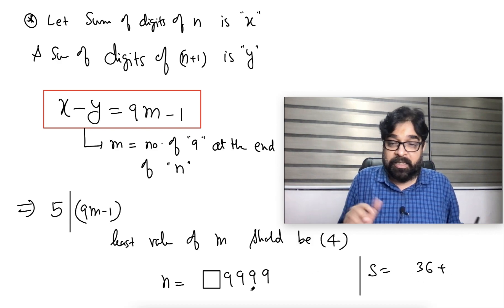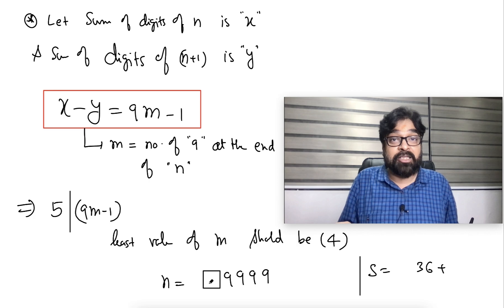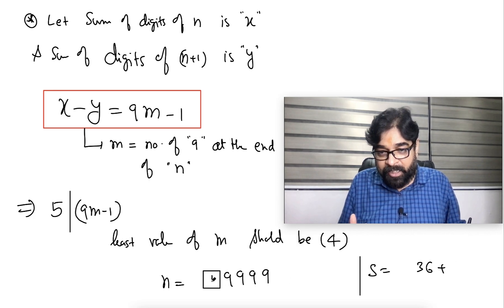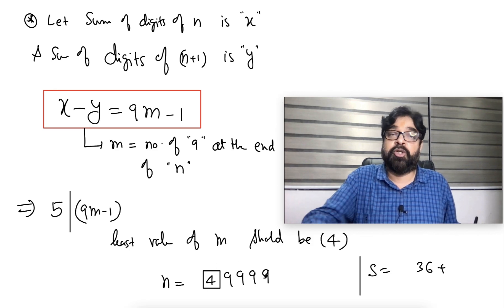1, I cannot put, because 37, 2 also no, 3 also no, 4, yes, 36 plus 4, 40. So 100 percent, your number should be this.